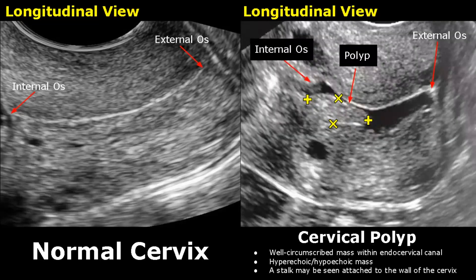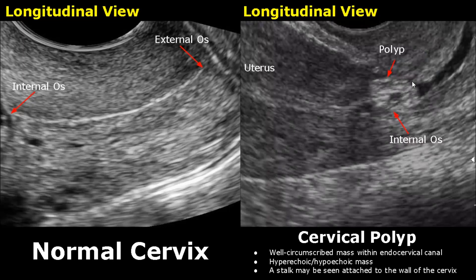Cervical polyp refers to a well-defined circumscribed mass within the endocervical canal. A polyp is attached to the wall of the cervix with a stalk, but this stalk is hard to see on ultrasound. This mass can appear either hyperechoic or hypoechoic, but mostly it is hyperechoic to the myometrium. This is another case of a cervical polyp — a well-circumscribed round hyperechoic mass in the cervix.